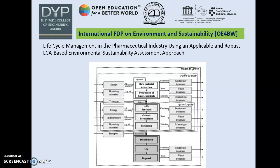Here there is a life cycle management in the pharmaceutical industry using an applicable and robust LCA-based environmental sustainability assessment approach. The generic life cycle of a pharmaceutical product begins with raw material extraction, then production of basic chemicals using electrical energy and operating materials such as oil. Then transport, then API synthesis (active pharmaceutical ingredients), also using energy, then galenic formulation and packaging. Raw materials also involve waste water treatment, exhaust gas treatment and waste treatment. The final stage is distribution, use and disposal. This is the typical generic life cycle of a pharmaceutical product.